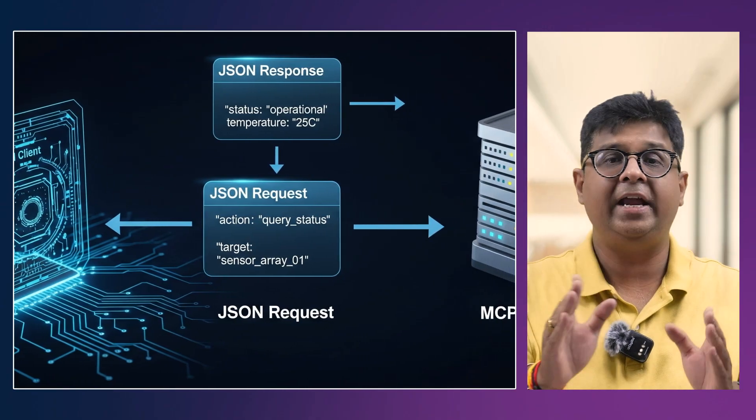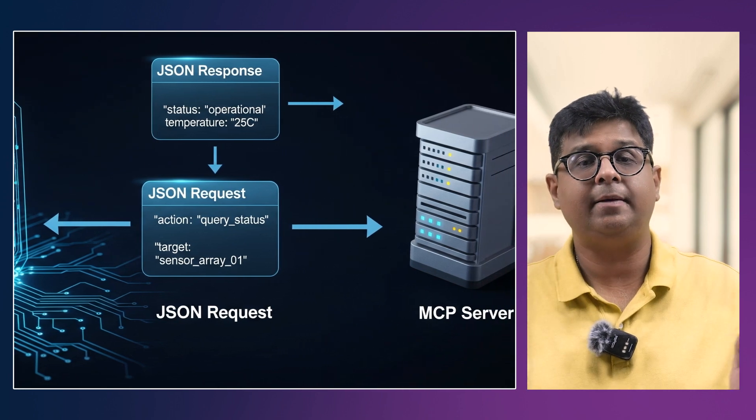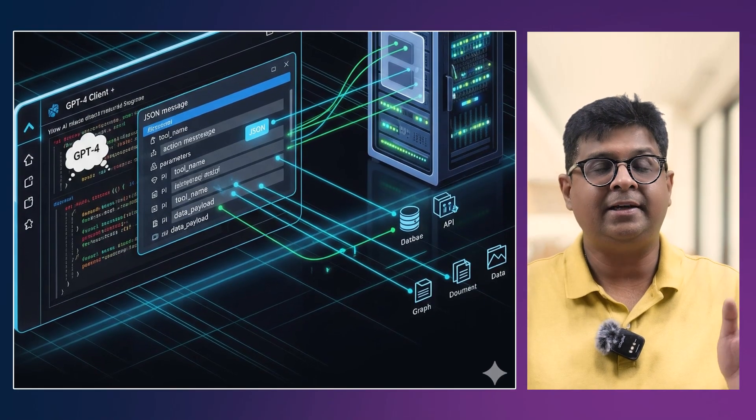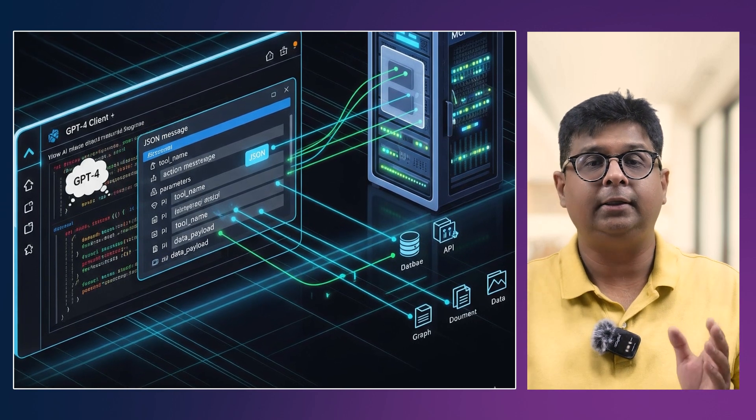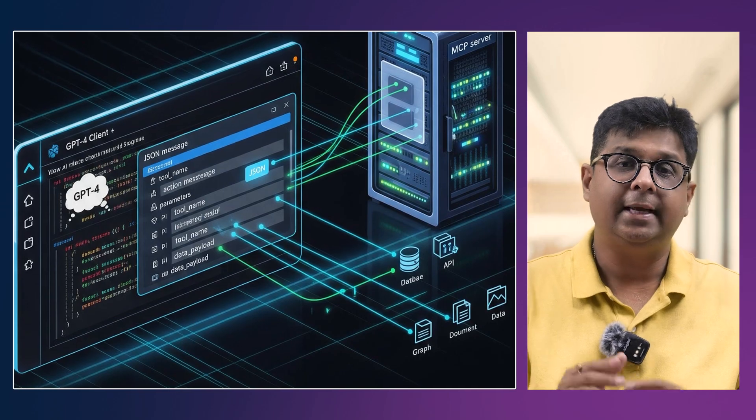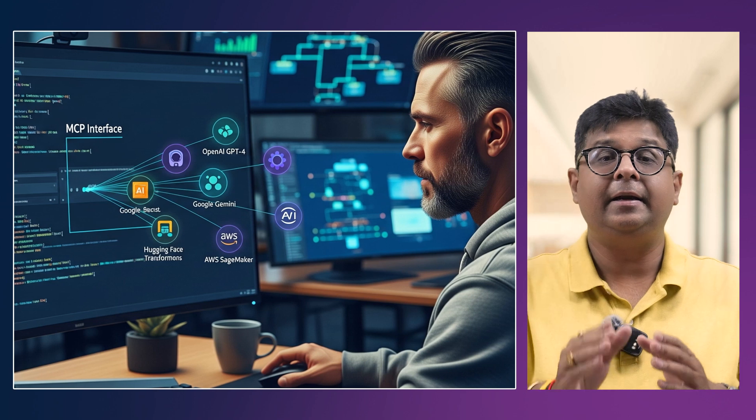Now let us understand how MCP works. We have an AI client, an MCP server, and JSON-based communication. An AI client like GPT-4.5 or Azure OpenAI talks to the MCP server. This MCP server acts as a bridge between the AI client and the tools or data they want to access. This communication happens over a JSON-based messaging system using a well-defined schema. The model can send intents like 'fetch calendar data' and the MCP server responds with a well-structured format.